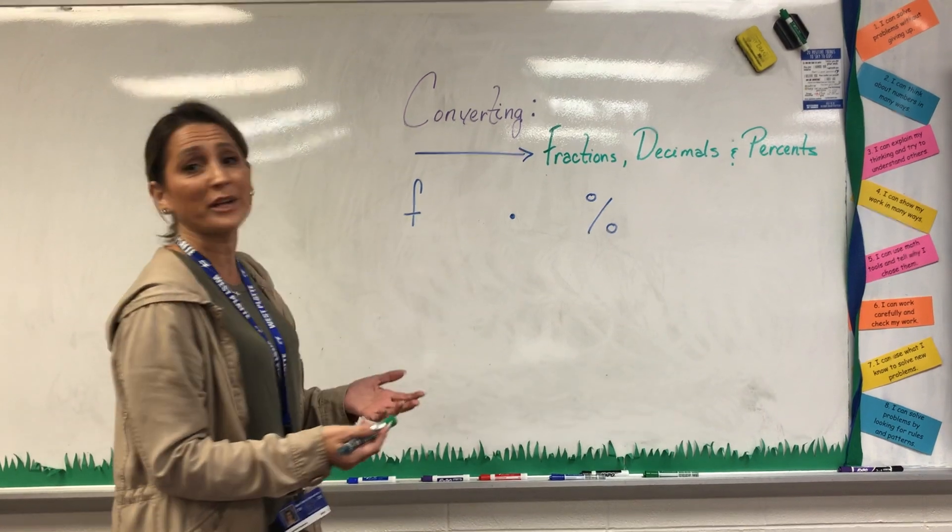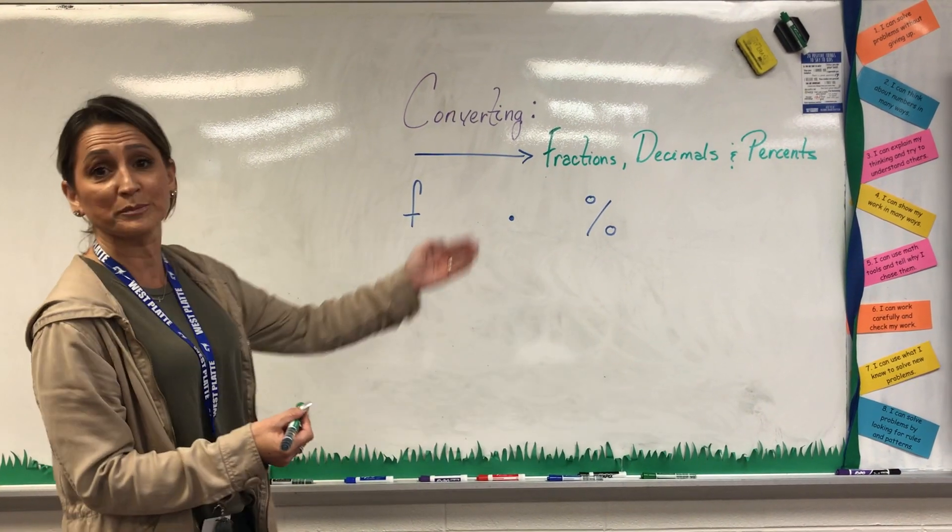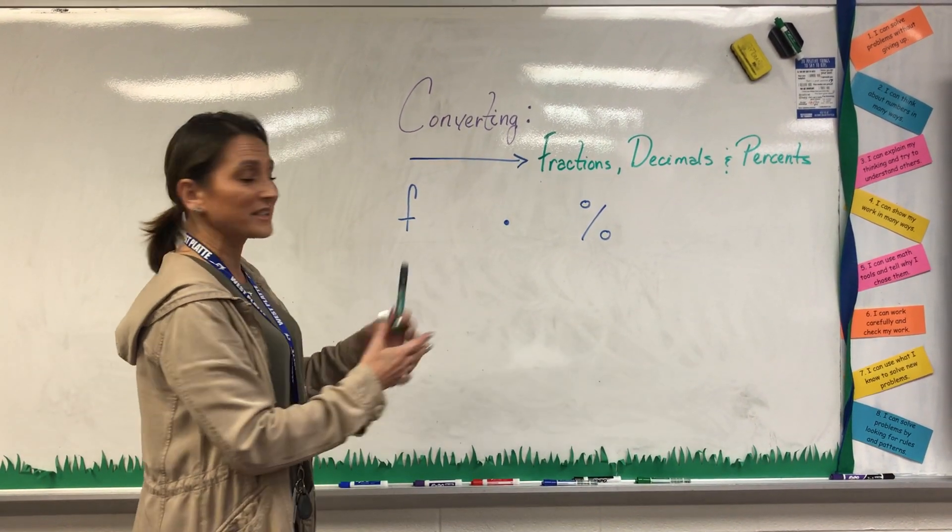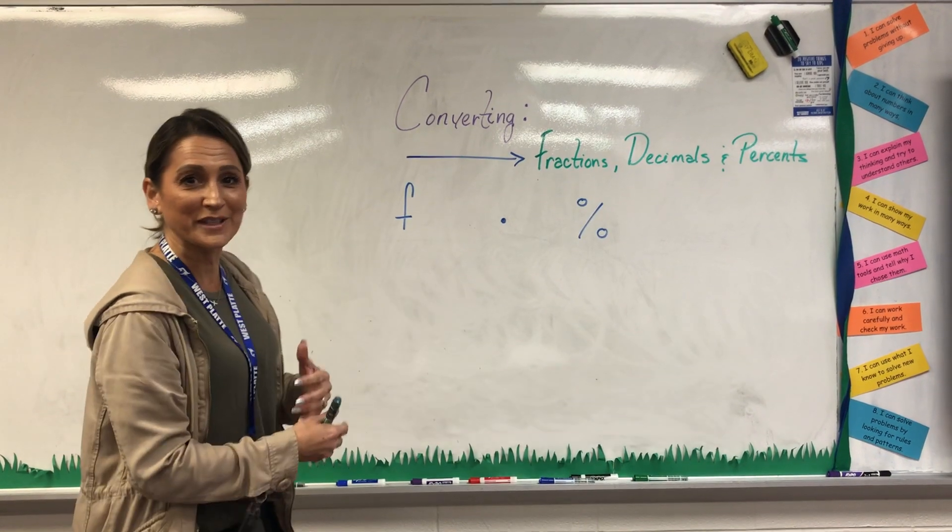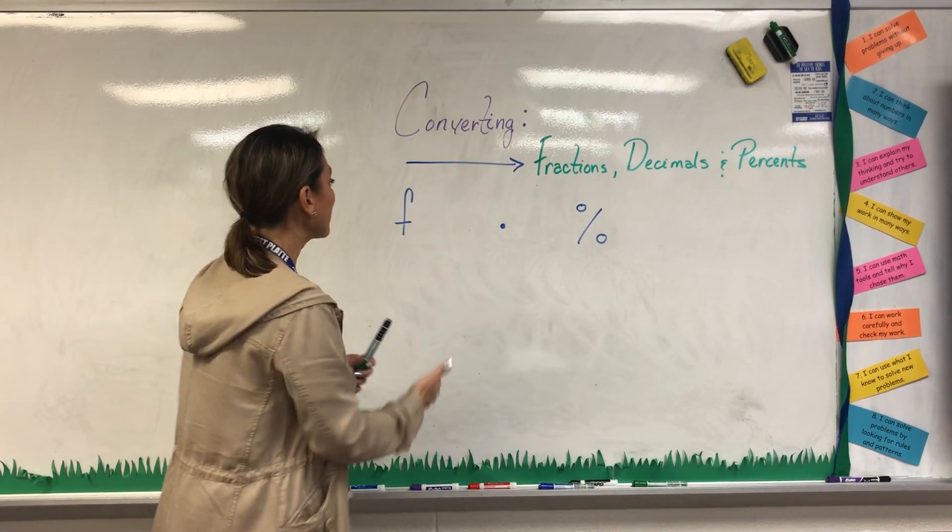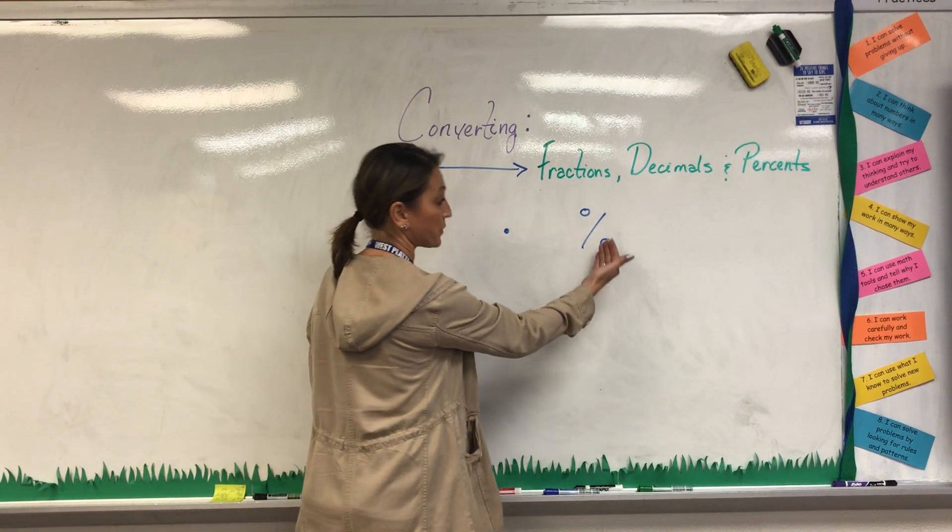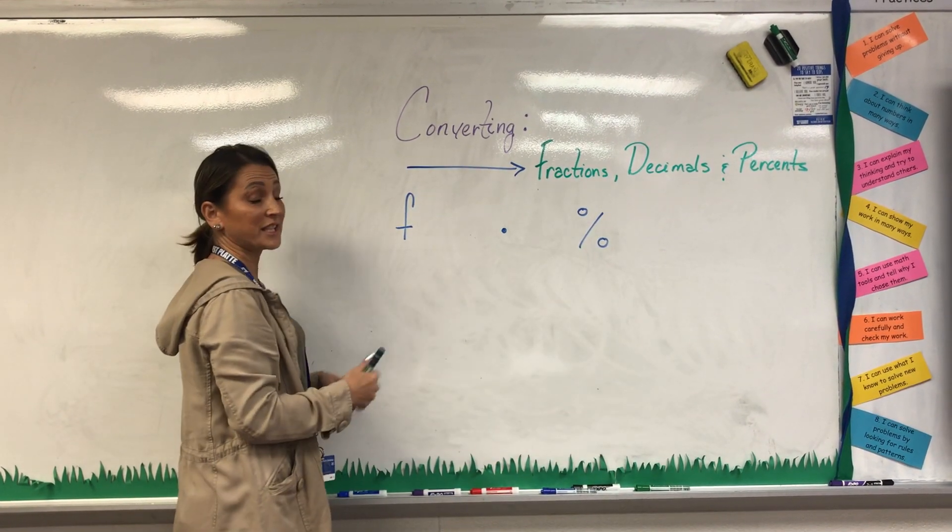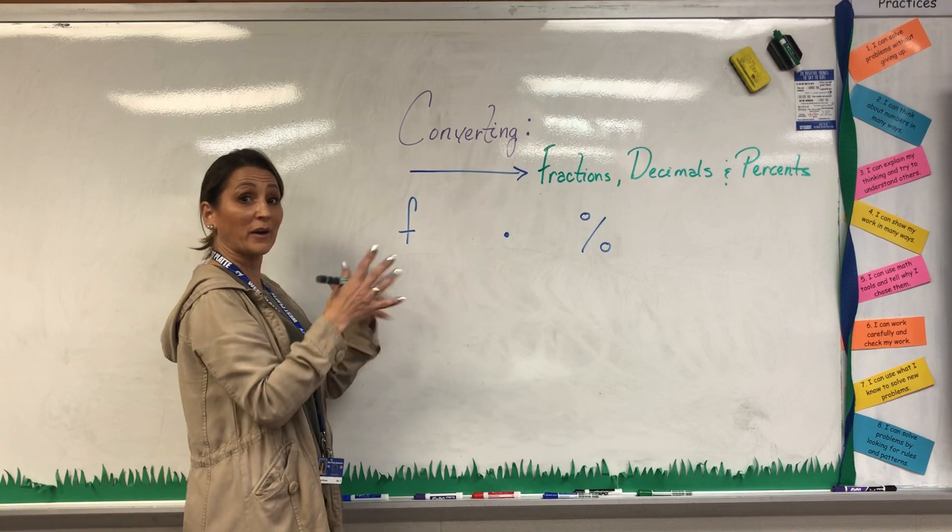I'm talking about conversions in the mathematical families of fractions, decimals, and percents. I always like to tell the kids these are kind of like cousins or in the same members of the family because fractions can become decimals, decimals can become percents, and those combinations can be in different variations.